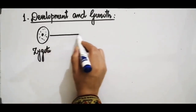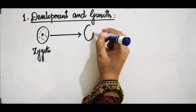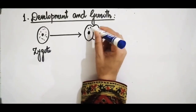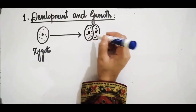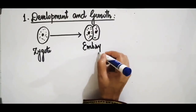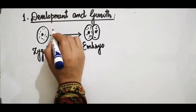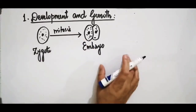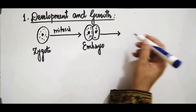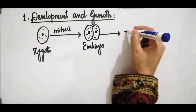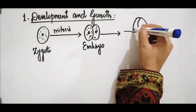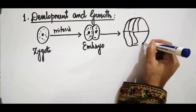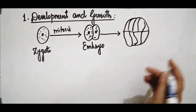After karyokinesis — the division of the nucleus — and cytokinesis — the division of the cytoplasm — the zygote develops from a single cell into a multicellular structure. The first two cells are formed, each having a nucleus and cytoplasm. This structure is called an embryo, formed due to mitosis. This embryo further divides by mitosis to form a larger multicellular structure.